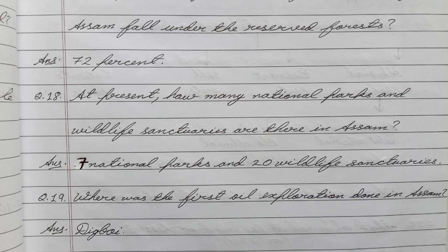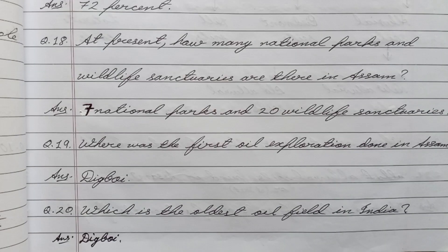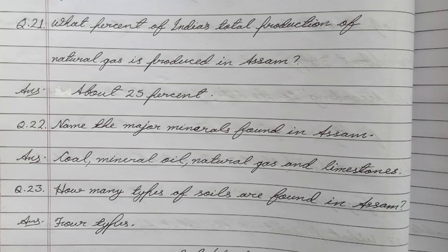Question number nineteen: Where was the first oil exploration done in Assam? Answer: Digboi. Question number twenty: Which is the oldest oil field in India? Answer: Digboi. Question number twenty-one: What percent of India's total production of natural gas is produced in Assam? Answer: About 25 percent.